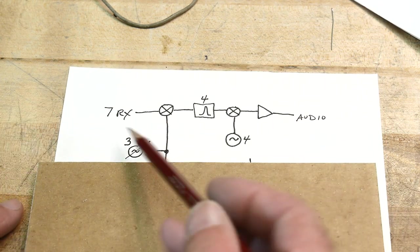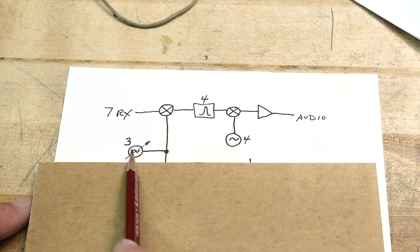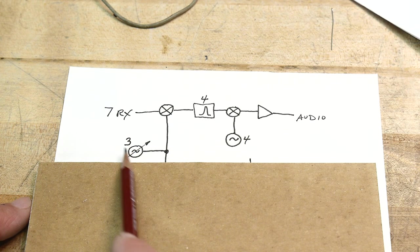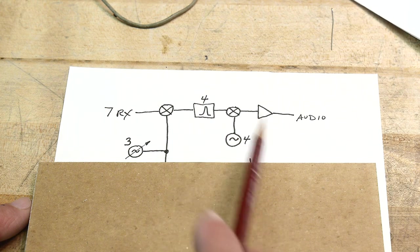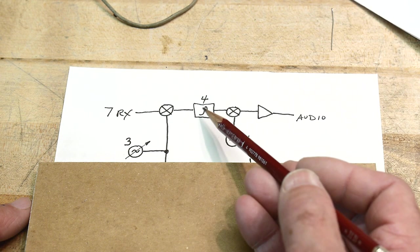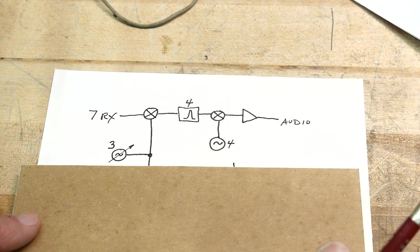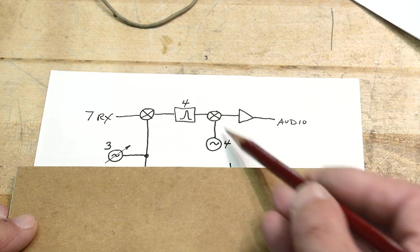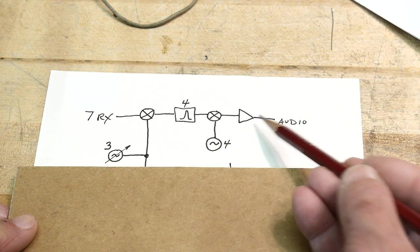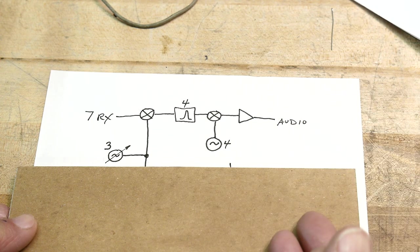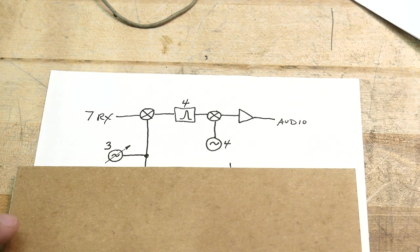The receive path: 7 MHz comes in, it gets mixed with a 3 MHz local oscillator that's tunable. So 7 minus 3 is 4. The first conversion IF frequency is a 4 MHz bandpass. Then that goes into a second mixer and gets converted with a 4 MHz oscillator. They mix down to 700 or 800 Hz, whatever you want your CW tone at.